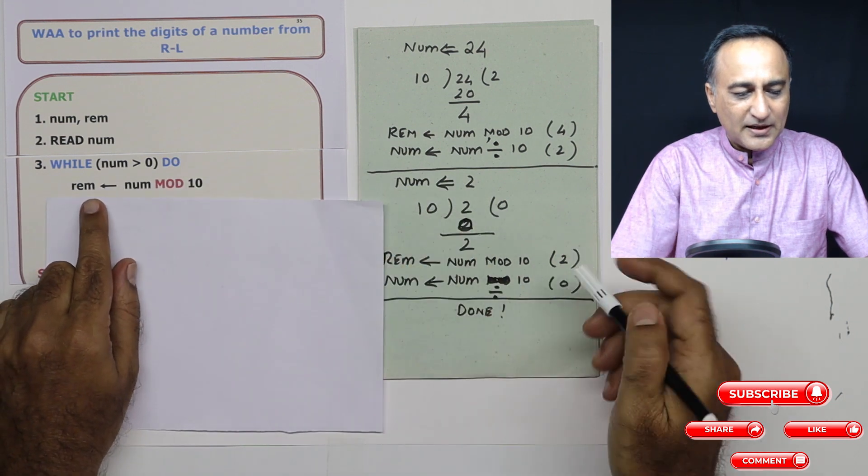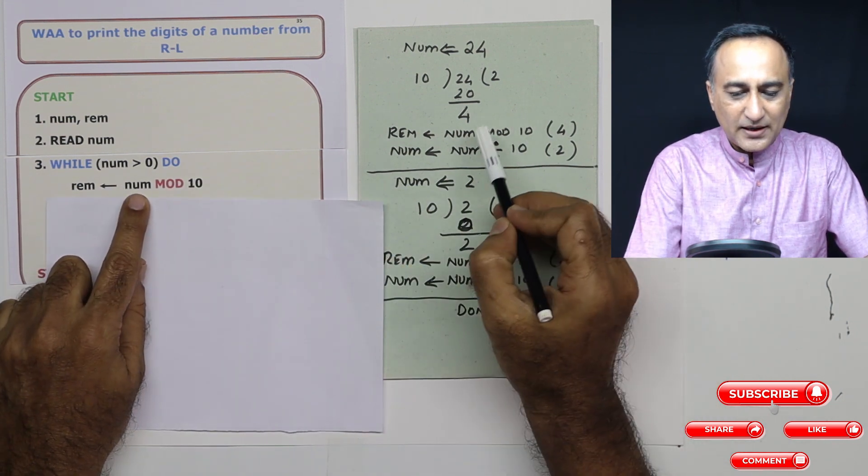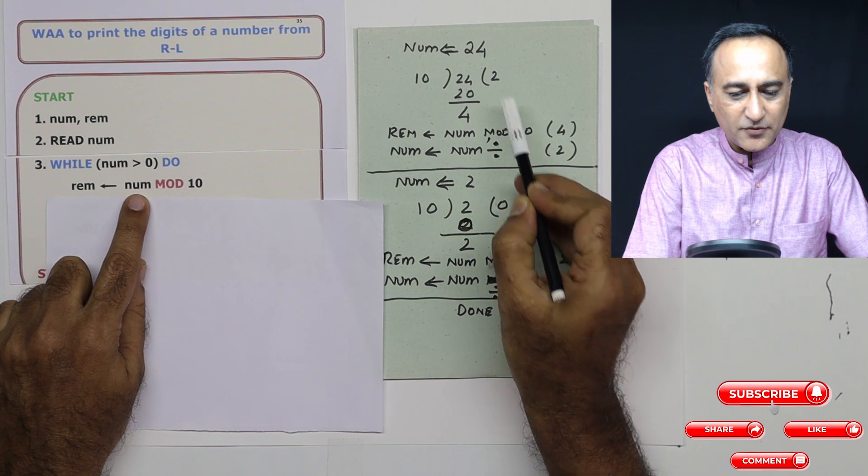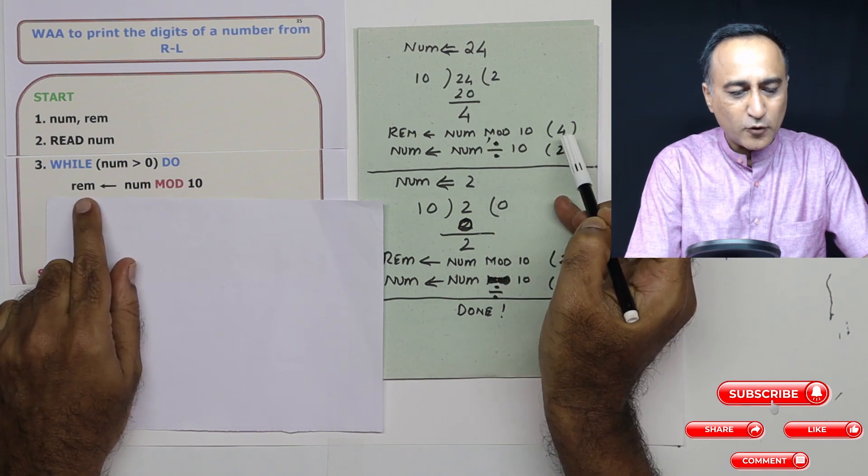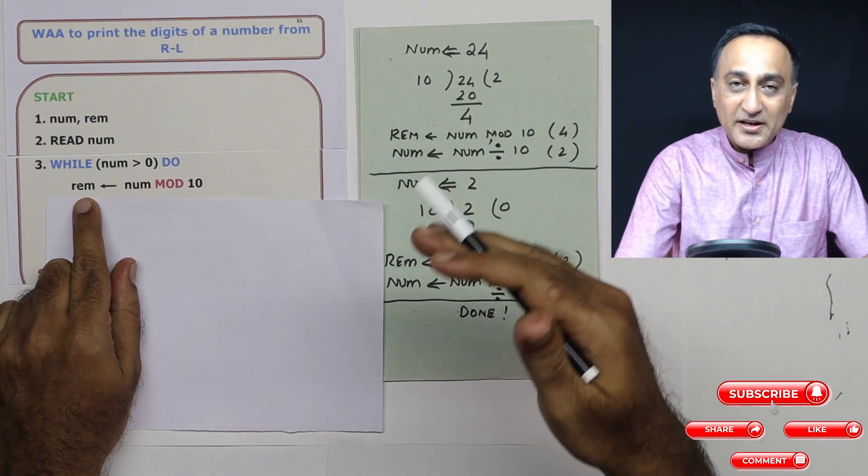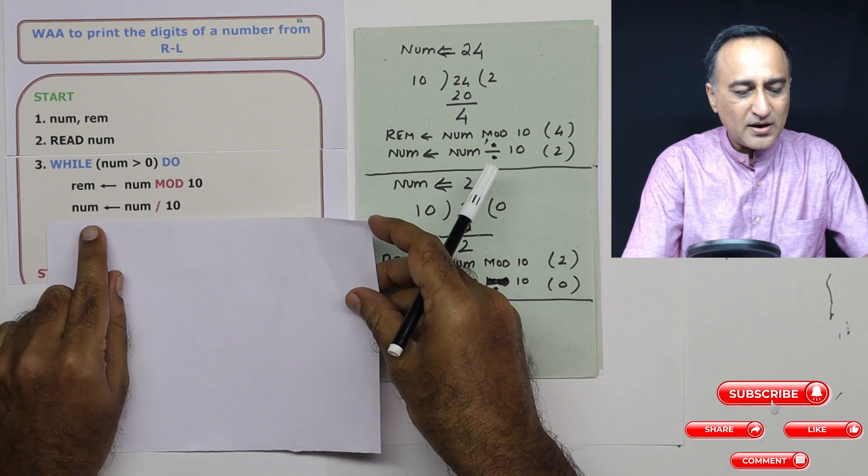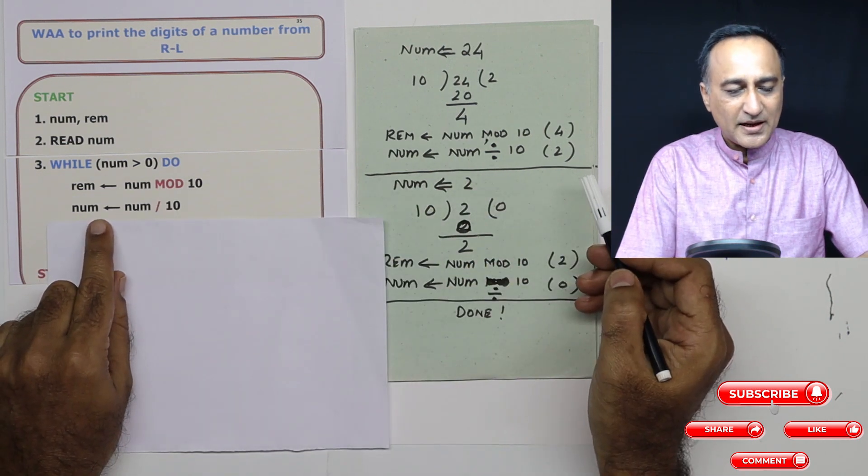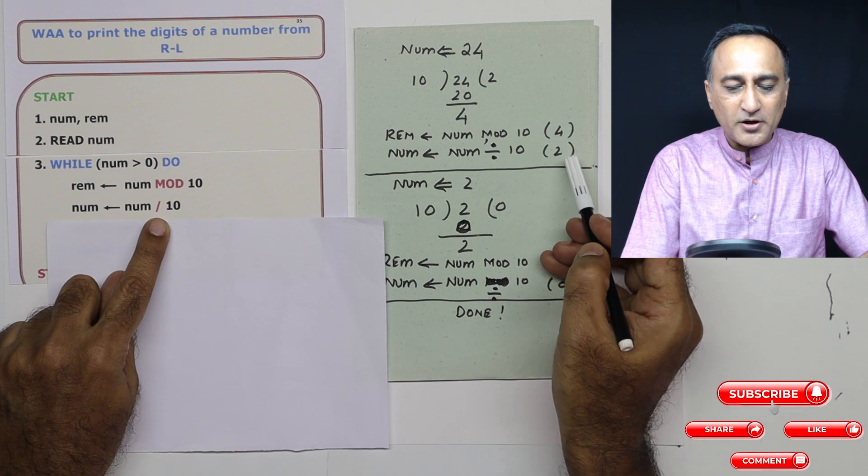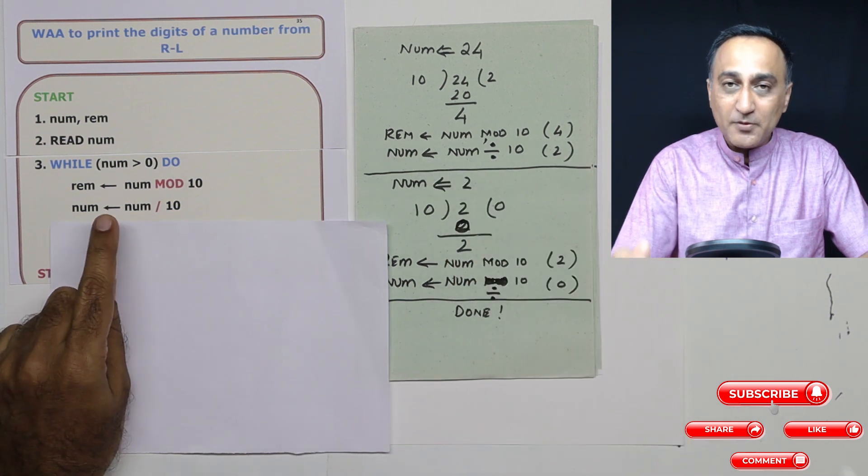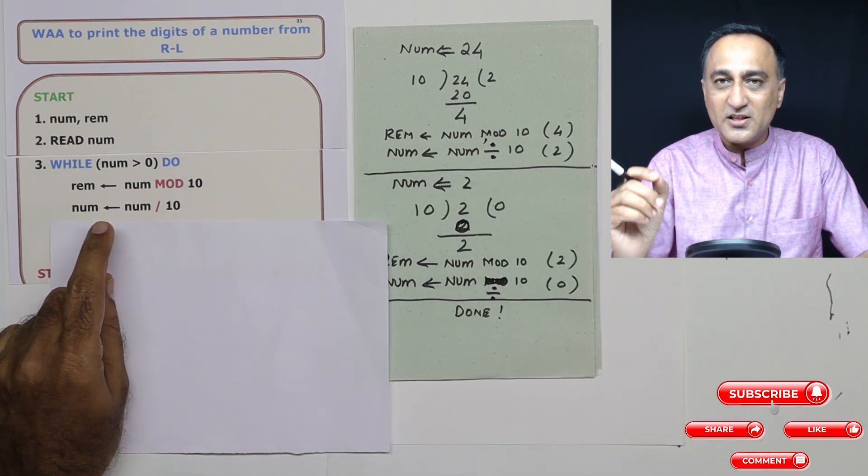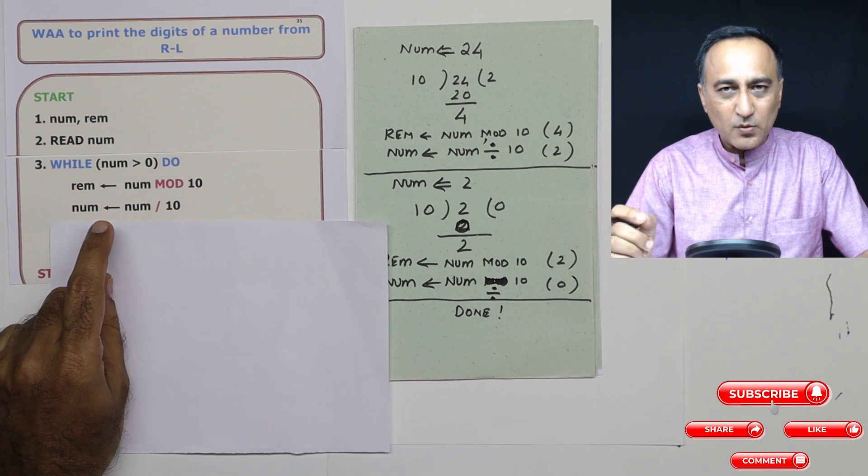Then I come here. Remainder is number mod 10. So if in case of 24, it will give me 4, remainder is 4. Now I need to lose that 4, so I am going to do a division by 10. Number is number divided by 10. So only 2 will remain in number. I am doing whole number division. I am not interested in the fractionals.